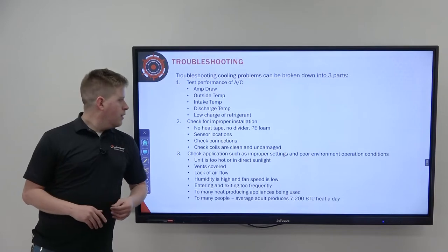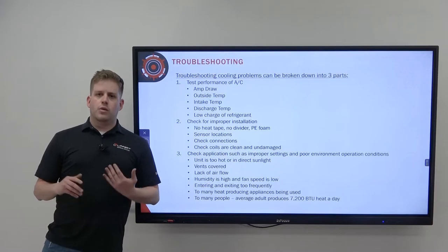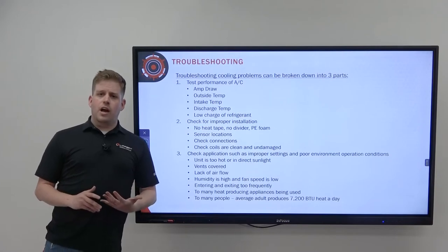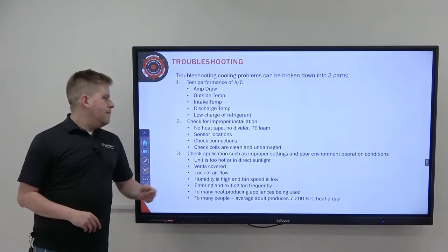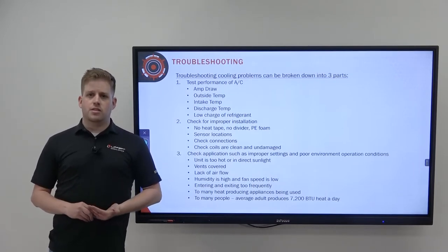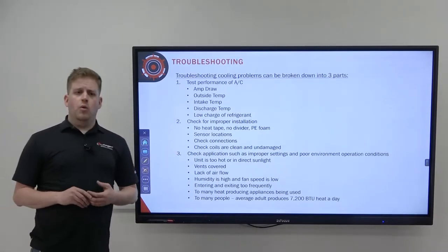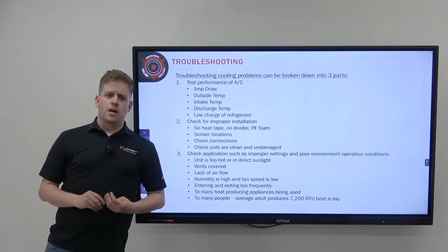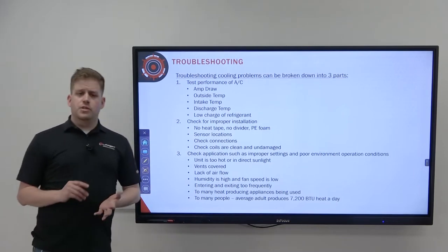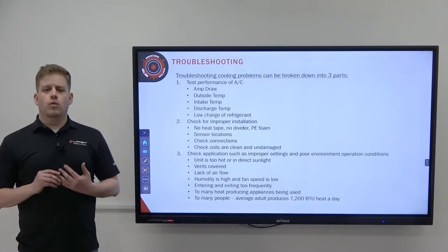Next, check for improper installation. Make sure there is no air leaking between the return and discharge. Make sure your heat tape and dividers are in place, and that you have your insulating PE foam. Make sure your sensors — both the room air sensor and the freeze sensor — are installed and working. Make sure connections are solid with no debris, dust, or loose connections. Finally, check that your coils, both evaporator and condenser, are clean, undamaged, and allow good airflow.